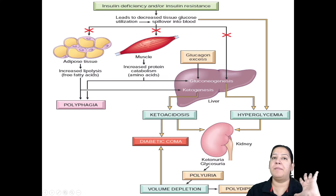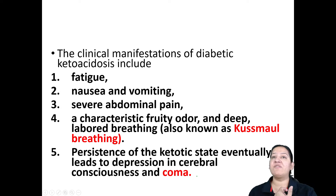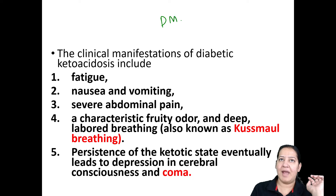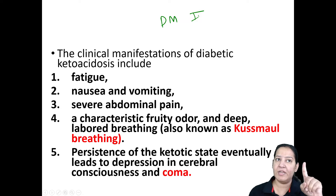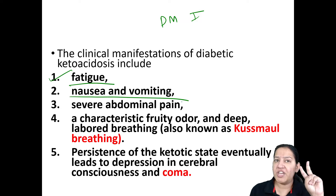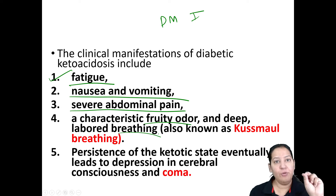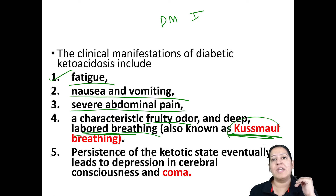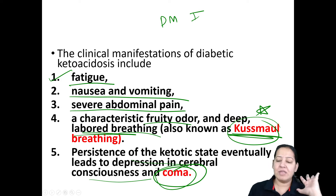During diabetic ketoacidosis, the patient will feel extreme fatigue, nausea, and vomiting. There is severe abdominal pain and a peculiar fruity odor in the breathing. The breathing is labored — this is known as Kussmaul breathing, which is an MCQ point. Eventually the patient will go into depressed cerebral consciousness, coma, and death. These are the clinical features of DKA.